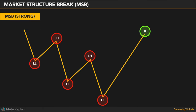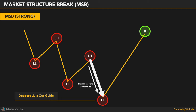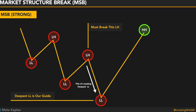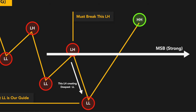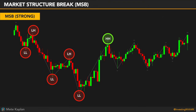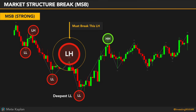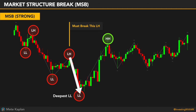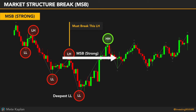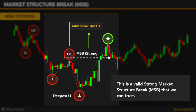Identifying strong market structure breaks is easy. First, identify the deepest lower low. Second, identify the lower high which creates the deepest lower low. If the price breaks that lower high at once with strong candlesticks and closes above it, then it is a strong MSB. As you can see in the example, we are breaking the lower high strongly before a pullback — this is a valid strong market structure break that we can trust.